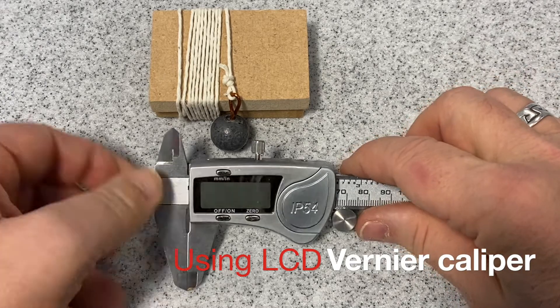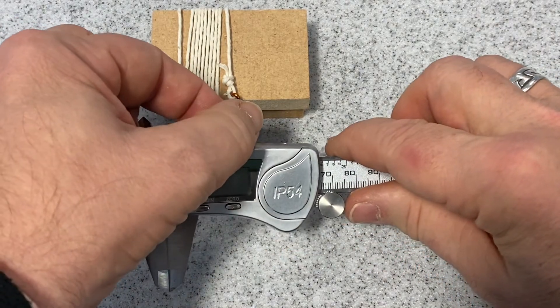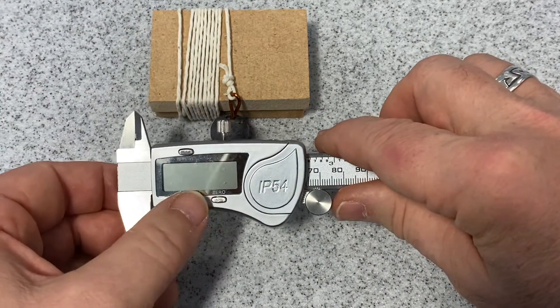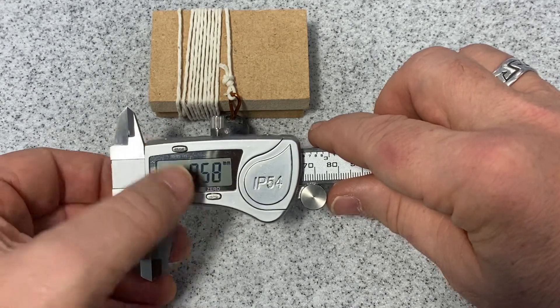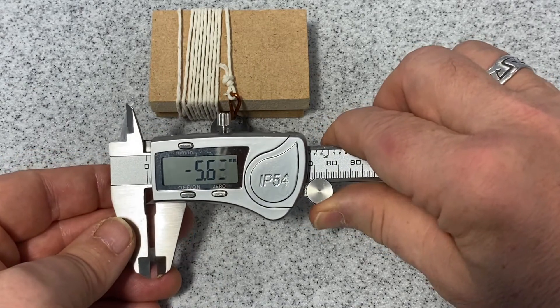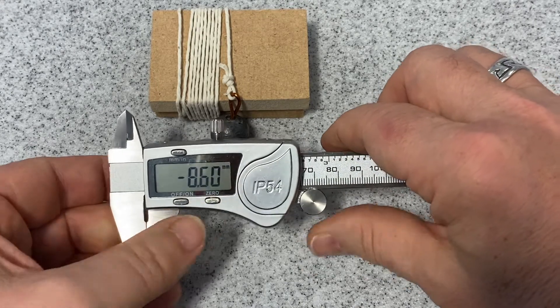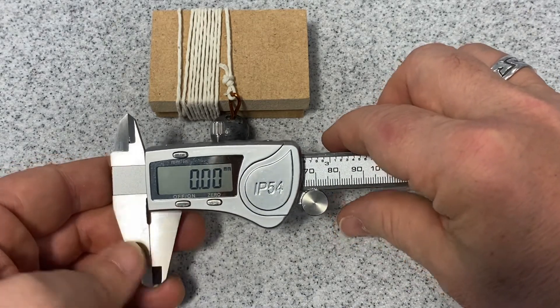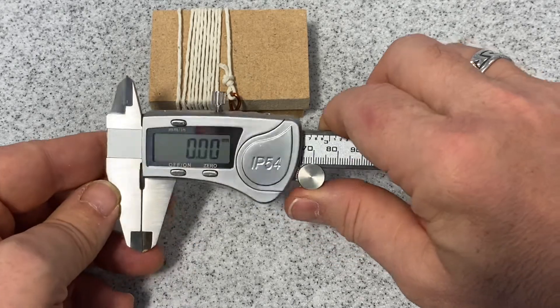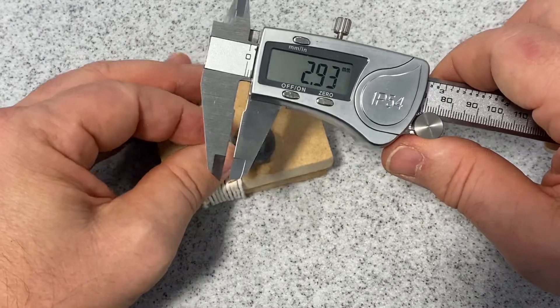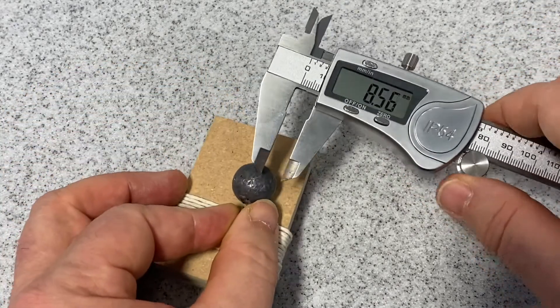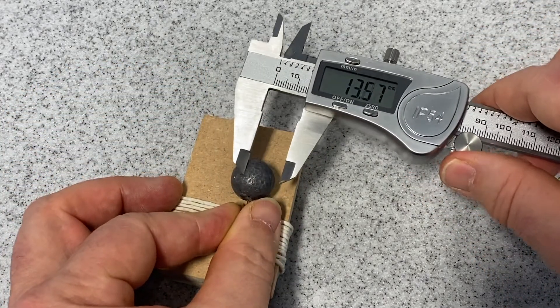Using the LCD vernier caliper: before using the caliper, release the locking nut at the top of the mechanism. The jaws of the caliper can be moved apart using the rotary wheel at the base of the housing. There is a zero button to reset the caliper, and the calibration of the caliper must be in millimeters.